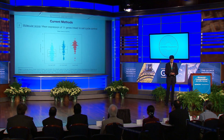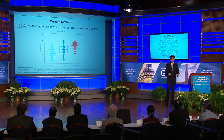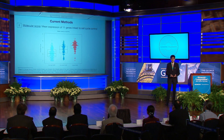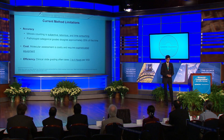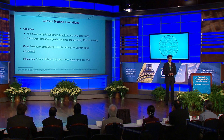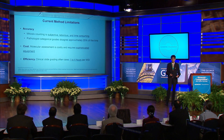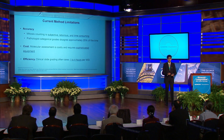The categorical and molecular scores are indeed well correlated, as shown here, although this agreement is not perfect. Current methods for assessing proliferation, however, are limited in their accuracy, in their cost, and in their efficiency.